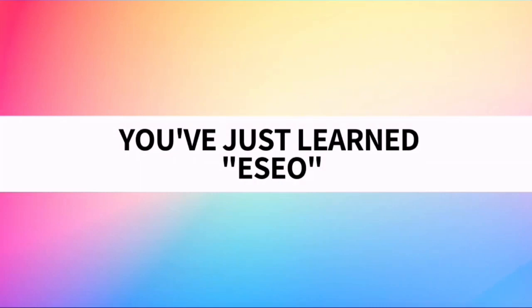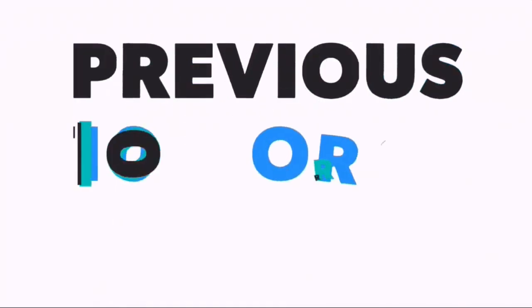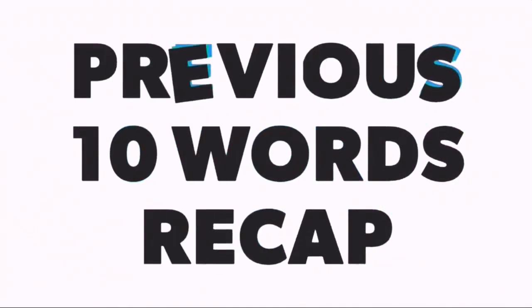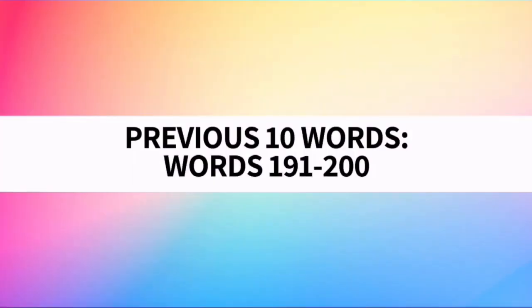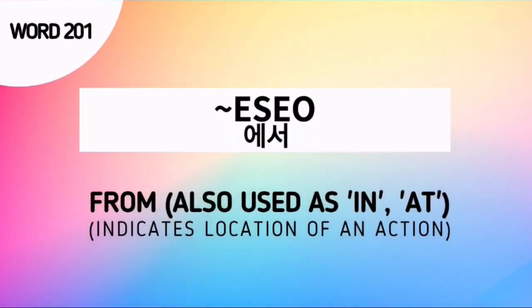And with that, you've just learned the suffix Esso. Now let's proceed to the previous 10 words recap. As of now, the previous 10 words are words number 191 to 200. Don't forget our word for today, which is actually a suffix — Esso — and this is used to say 'from.'